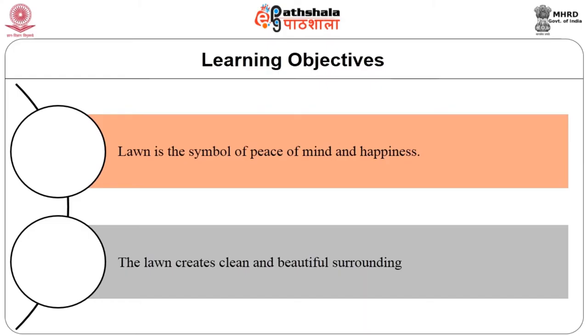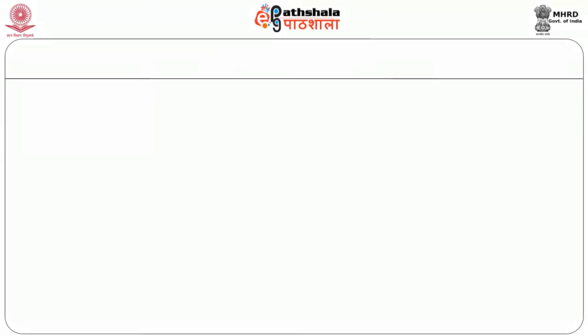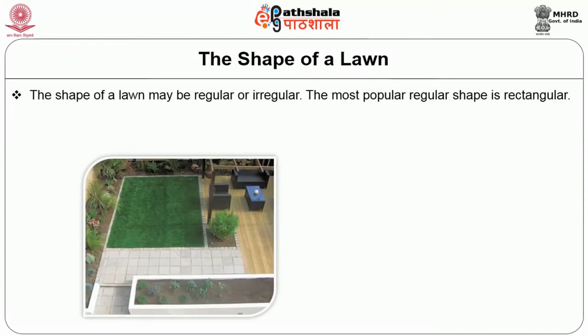The position of lawn may vary depending upon the layout of the garden. Next we will see the objectives. The main objective of the lawn is creating a beautiful landscape design. Lawn is a symbol of peace and happiness. The lawn creates clean and beautiful surroundings. The shape of the lawn may be regular or irregular. The most popular regular shape is rectangular.